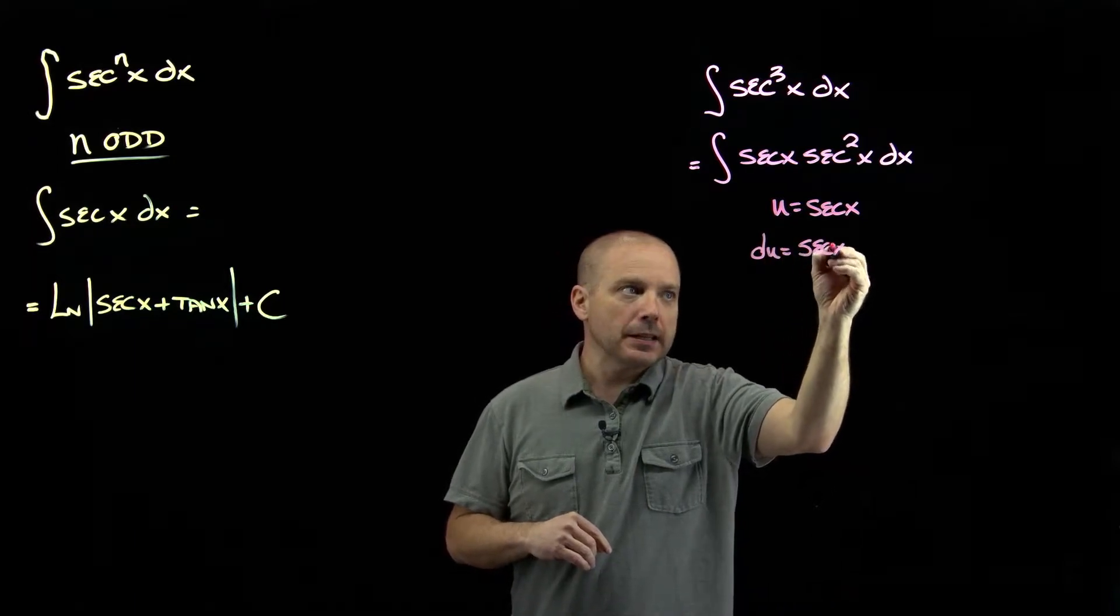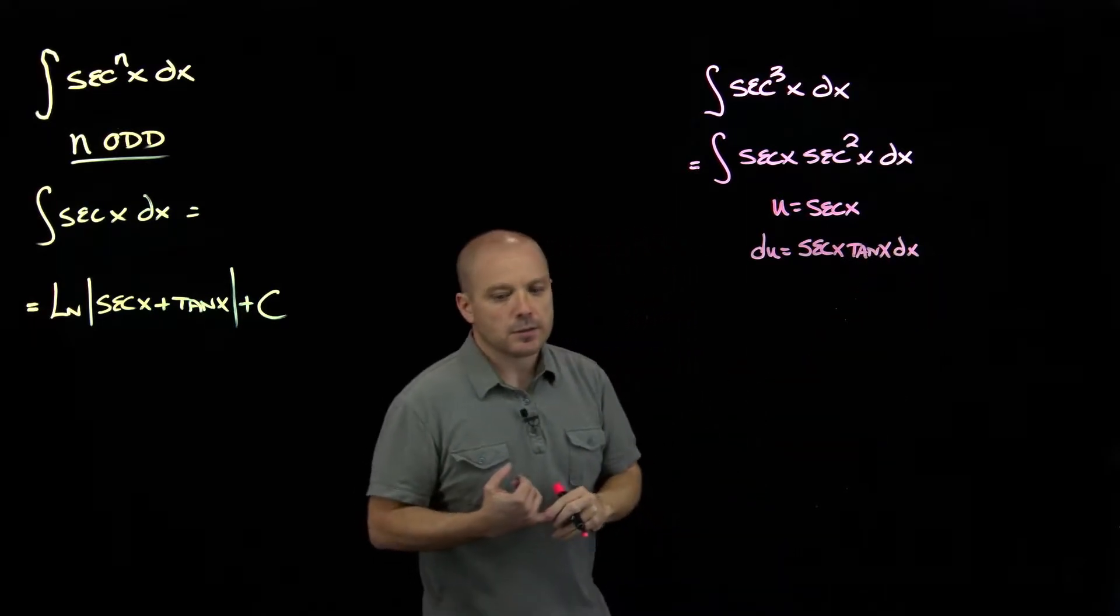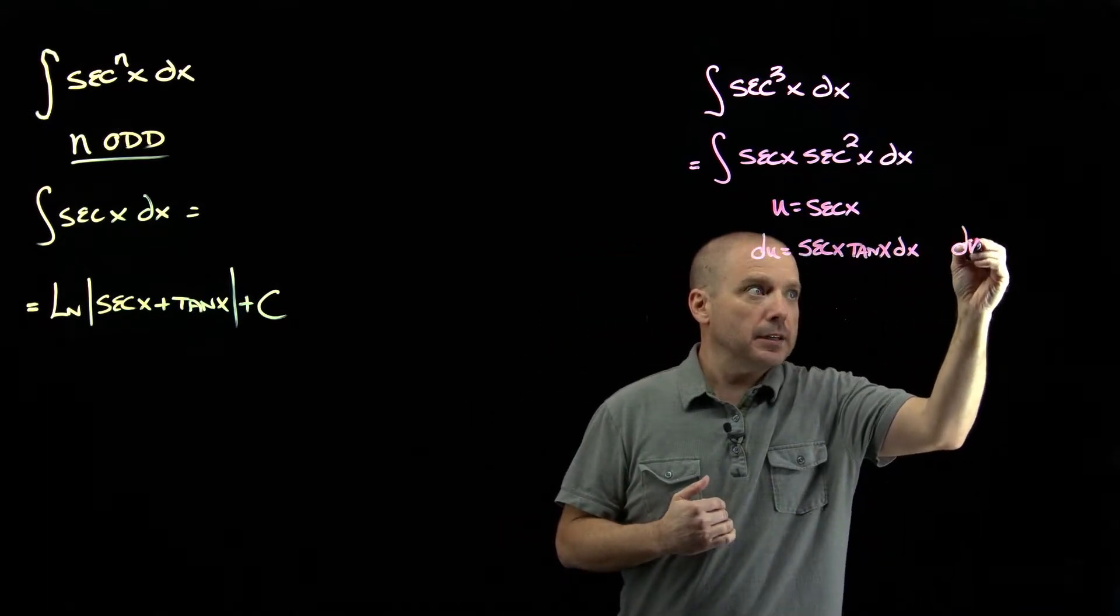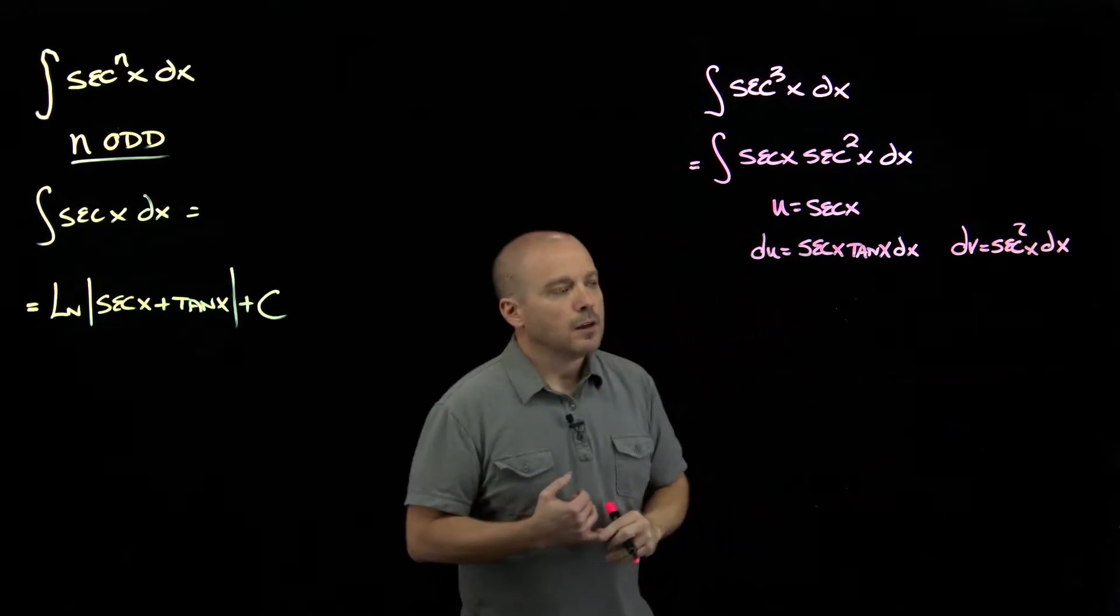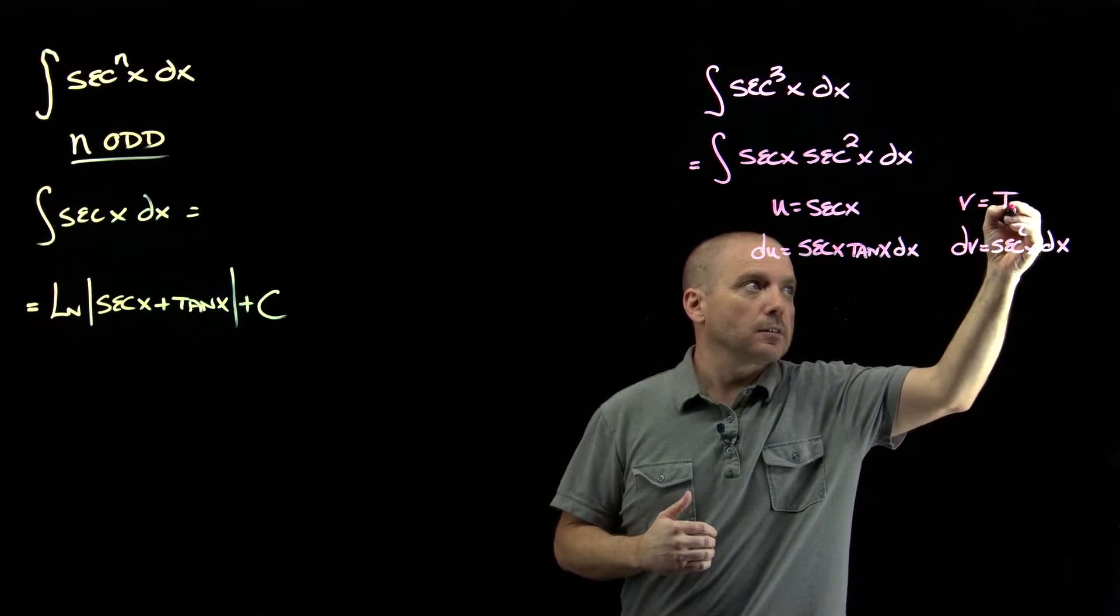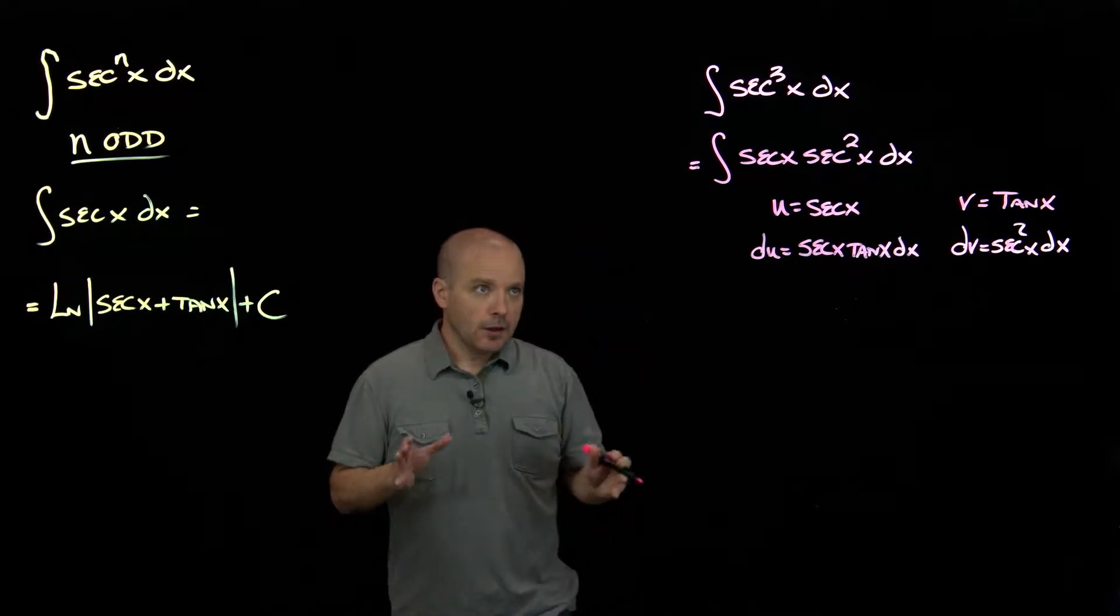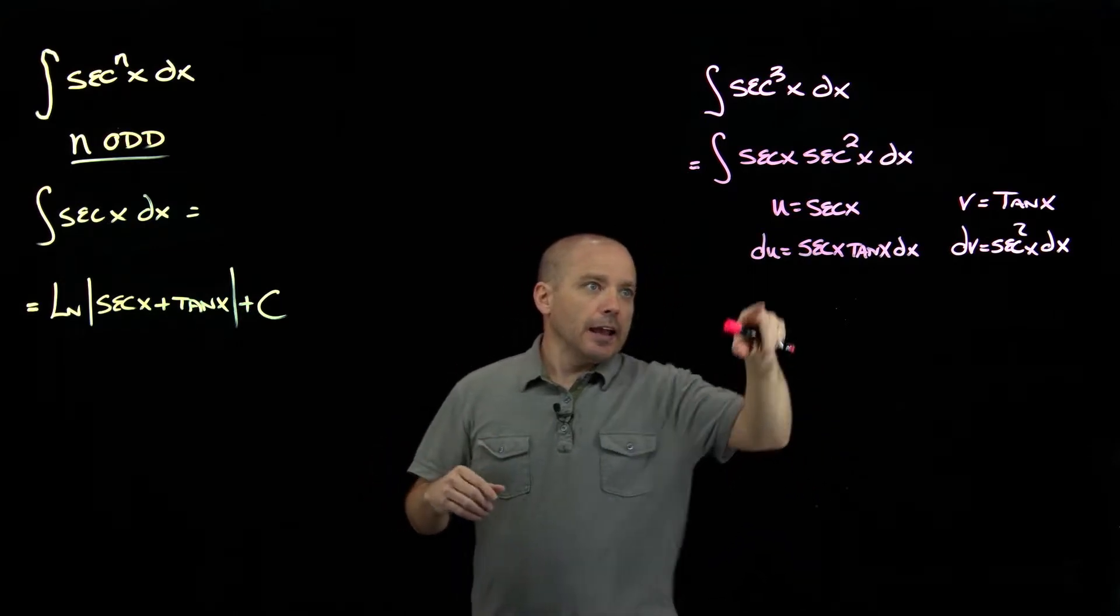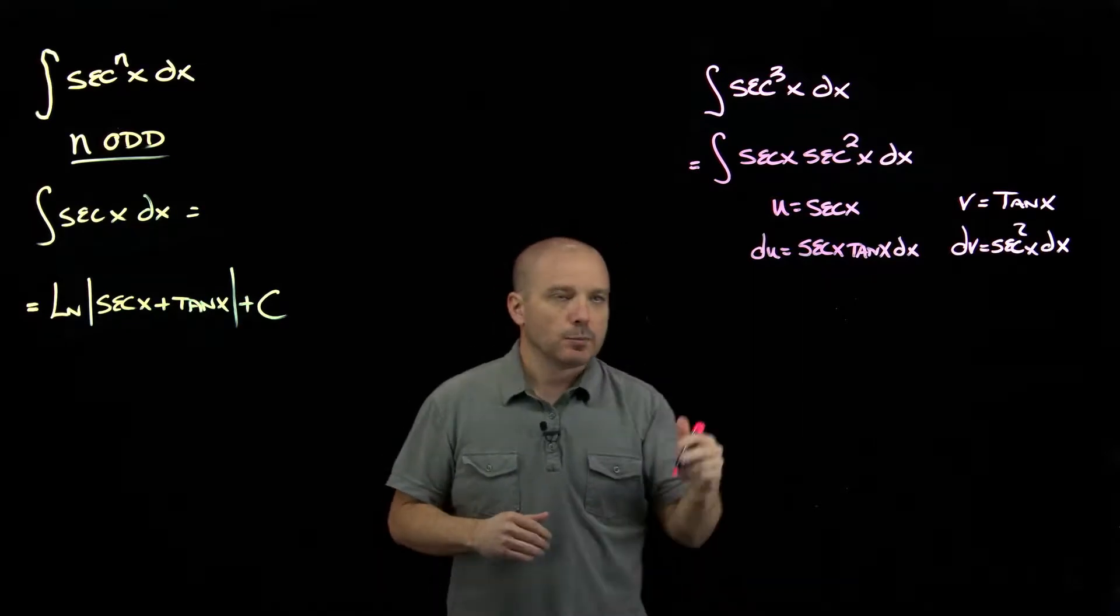Our u is secant, so du is secant x tangent x, which leaves our dv to be secant squared. That makes sense, right? Because that's something we know the antiderivative of, and it's nice and easy, it's just tangent. Now, although we didn't use the Pythagorean identity, the point of the Pythagorean identity was to introduce some tangents, and notice we did introduce tangent into the problem here by using parts.